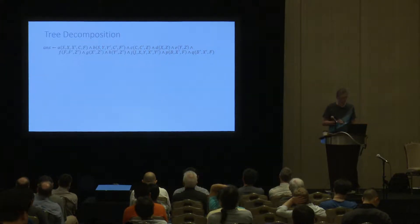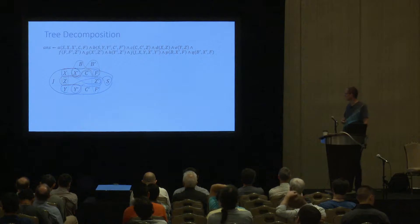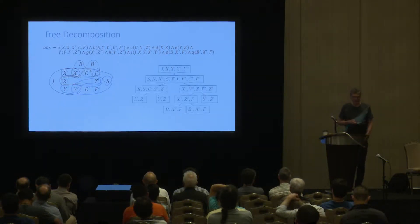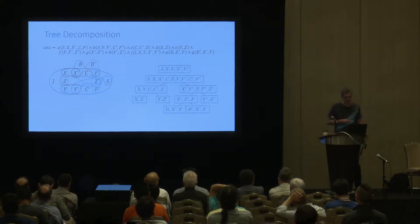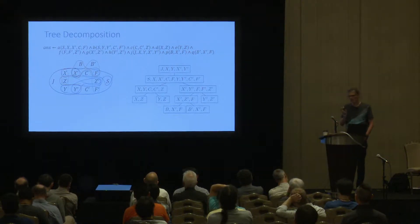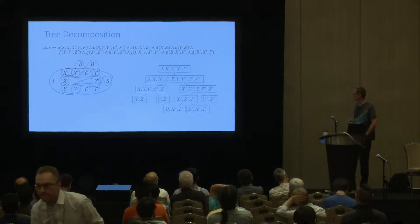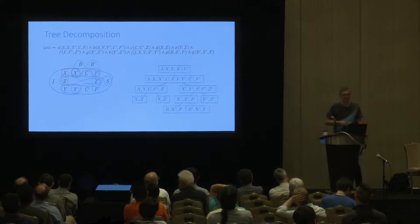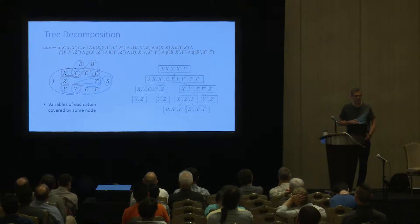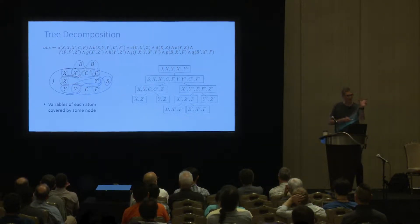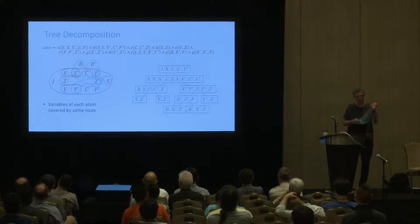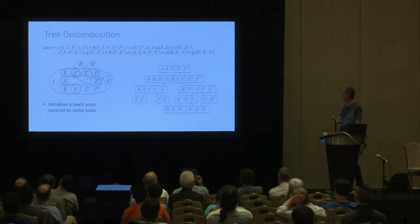Let's look at a slightly more complex conjunctive query whose hypergraph looks like this. A tree decomposition of the query, or equivalently of the hypergraph, is a tree whose nodes are labeled by sets of variables — sets of vertices of the hypergraph. We call these sets of variables bags. These bags have to satisfy two conditions. The first one is that every atom of the query has its variables fully contained in one of the bags.